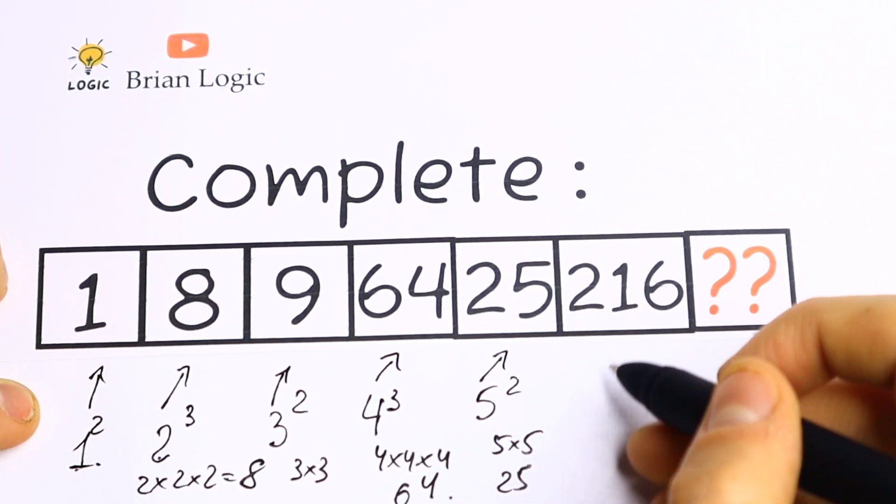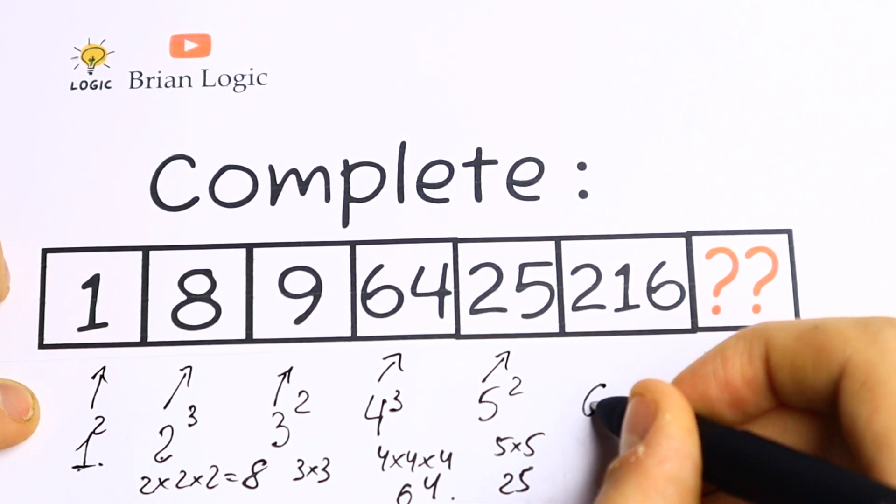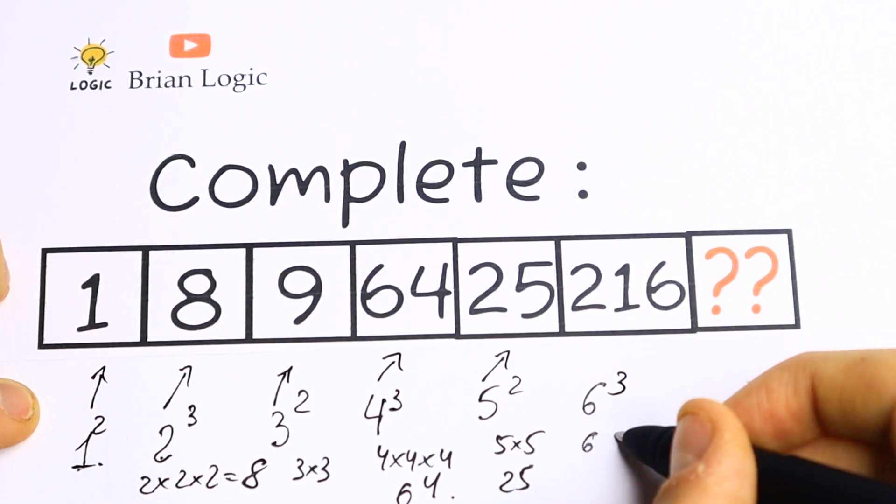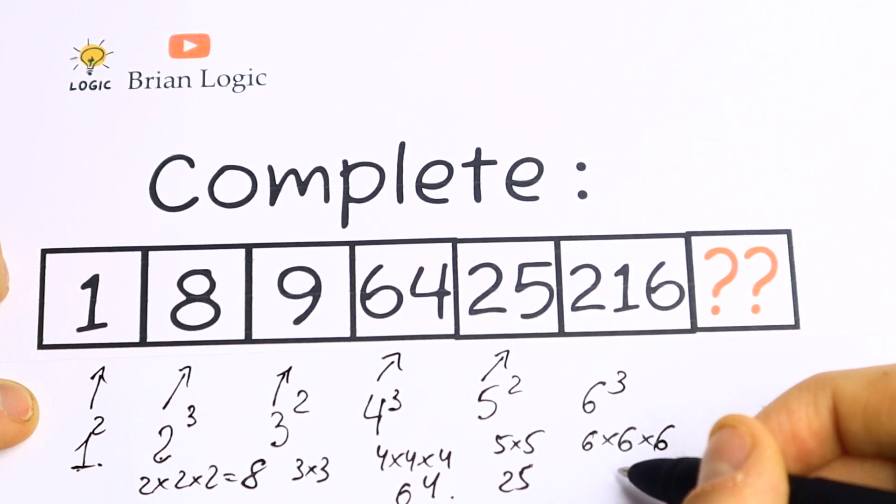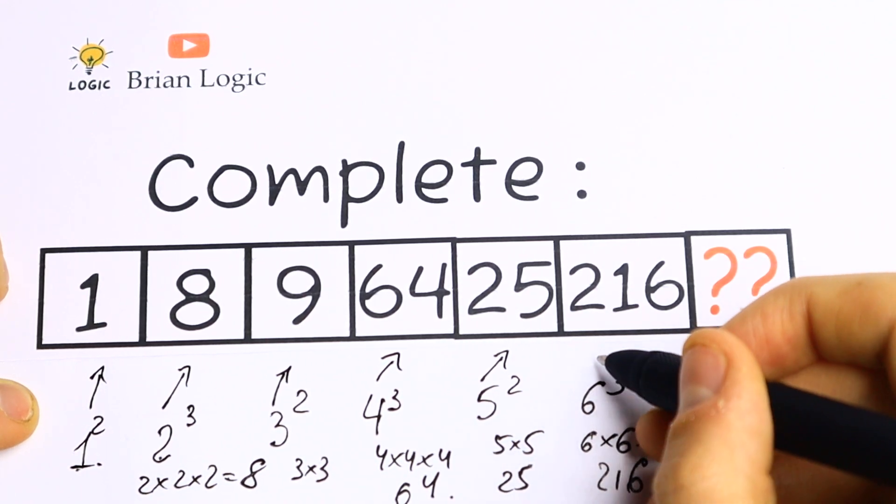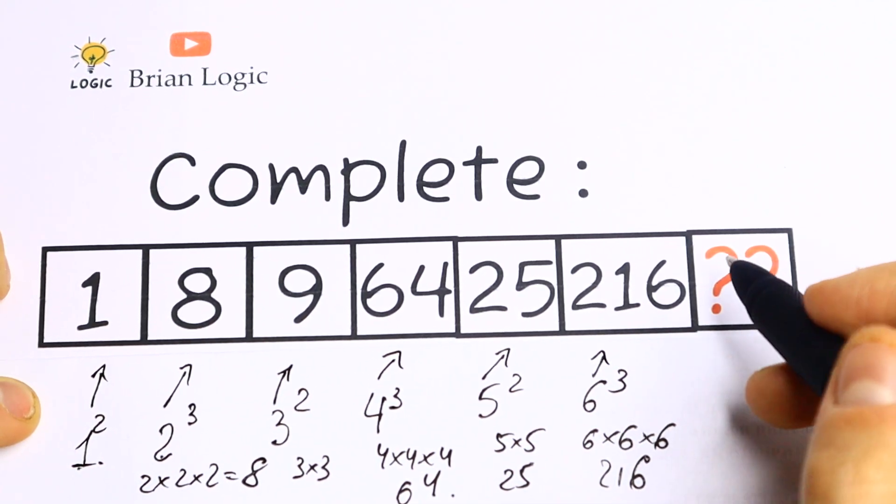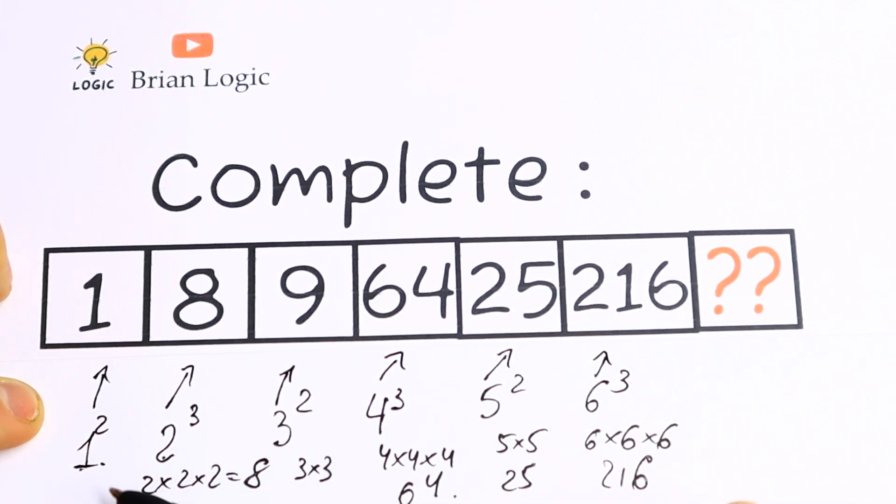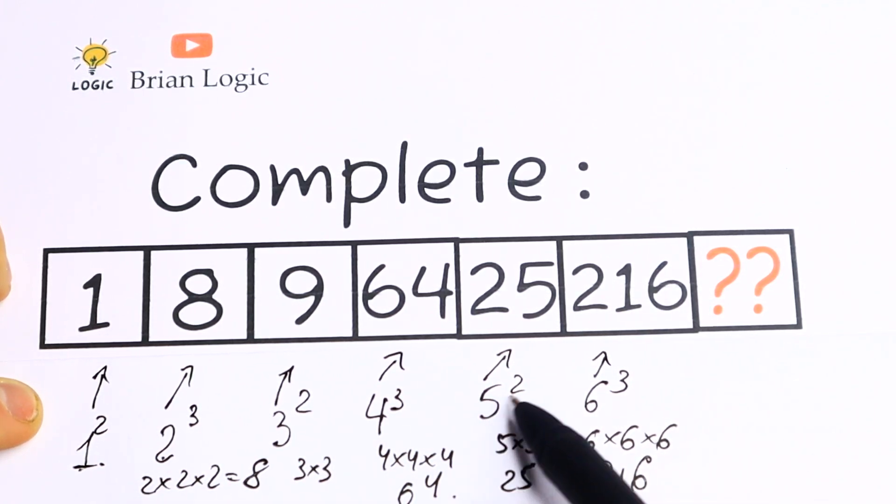This 216, as you can see, is really good to express as 6 cubed, because 6 times 6 times 6 will be equal to 216. So this is our 6 cubed. As you can see, we create a natural order: 1, 2, 3, 4, 5, 6.